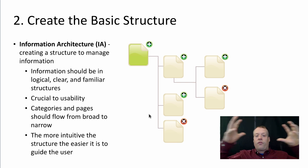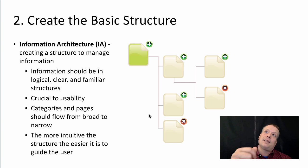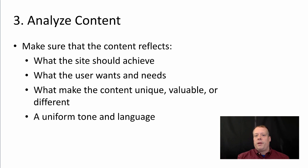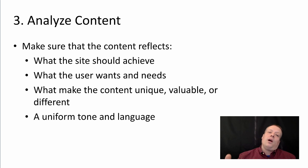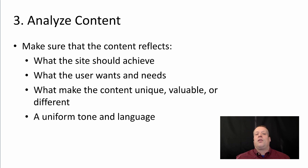In general, categories and pages should flow from broader to narrow and the information architecture should reflect that. The more intuitive the structure, the easier it is for the user to find what they want, and for you as a digital marketer to design content that will guide the user to achieve what you want. After you've done that — and that's probably one of the biggest steps — you should analyze the content, both what you have already and what you want to create. You want to make sure that the content reflects what the site should achieve, what the user wants, what makes that website unique, valuable, or different, and it should all be written in a uniform tone and language. Analyzing the content can help you understand where those aspects need to be worked on to a larger extent.